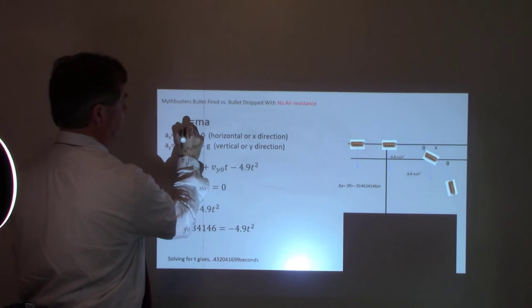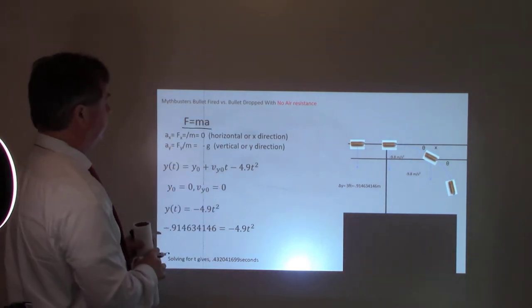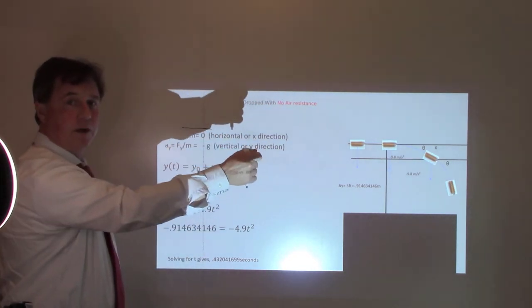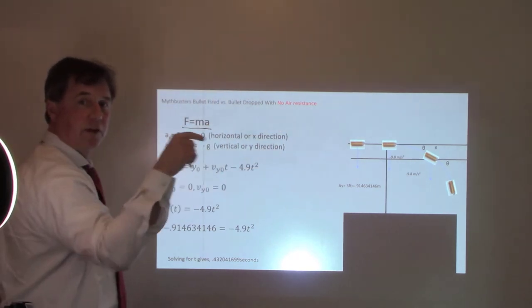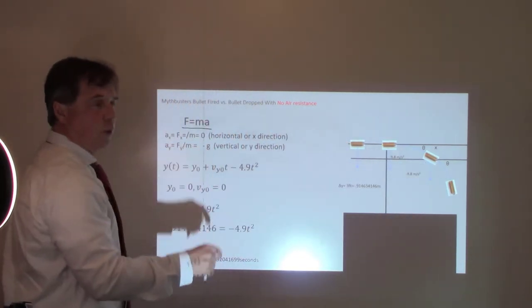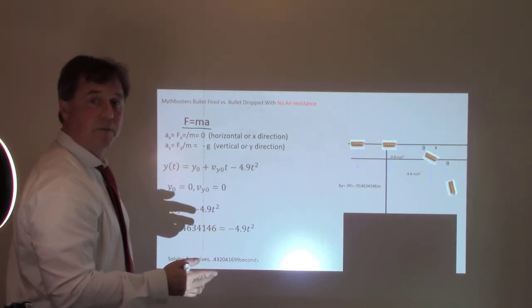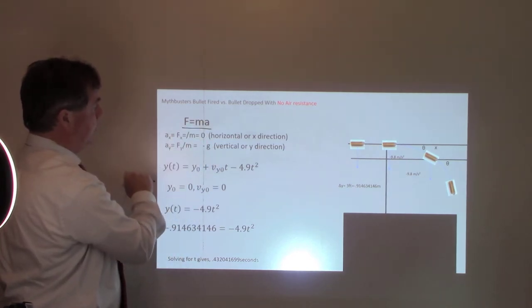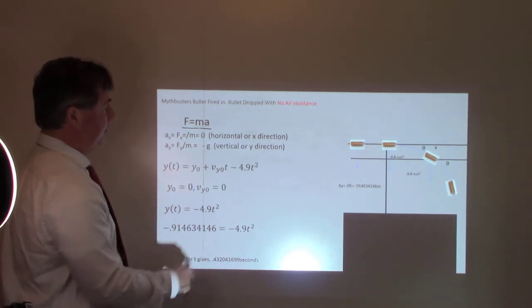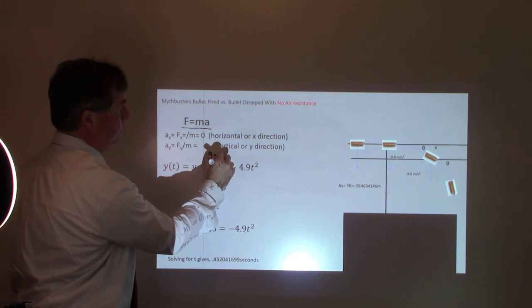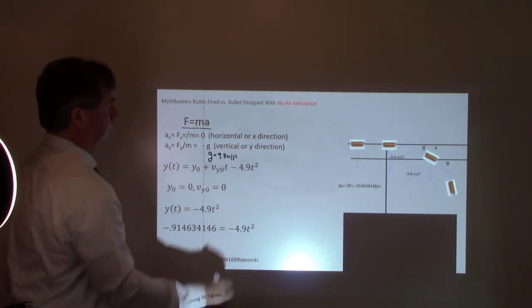So F equals ma. That's all we need. So what does that look like for acceleration in the horizontal direction? So you fire a bullet from a gun. It's going to go that way. It's also going to go down as well. This path. Well, there are no forces in that direction. I'm going to assume there is no air. But what about in the y-direction? Gravity, right? So acceleration is equal to force divided by mass. And the force divided by mass in the y-direction is just minus g. And in meters per second squared, g is equal to 9.8.